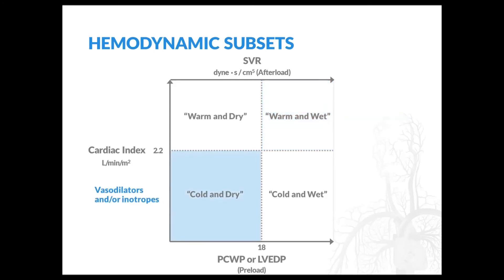In subset three — cold and dry patients — symptoms of low cardiac output are present but patients do not have volume overload. Initial therapy consists of vasodilators and/or inotropes. Vasodilators are preferred initially because they have fewer adverse effects, and those that do occur are often less severe than with inotropic therapy. However, many patients present with low blood pressures that preclude the use of vasodilators, so inotropes may be required first line. In very rare cases patients may be too dry and may benefit from very gentle fluid hydration.